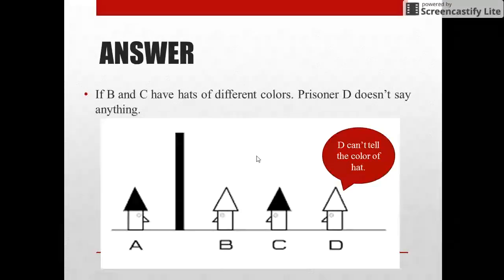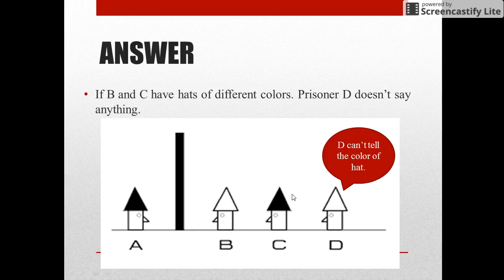But what if the color of the hats of B and C are different? Then the prisoner D cannot say anything with certainty.